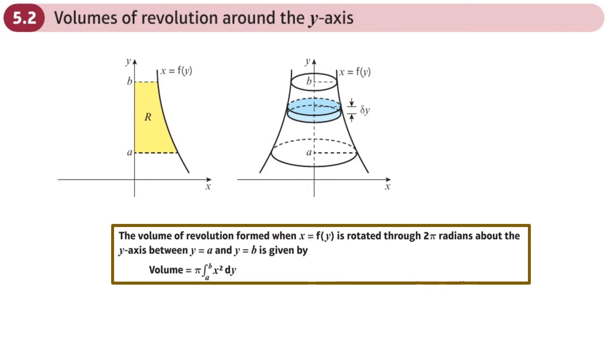This is the second section on volumes of revolution, and here we're looking at volumes of revolution around the y-axis. Very similar to volumes of revolution around the x-axis, this time we take a strip and rotate it 360 degrees, or 2π radians, around the y-axis to create a volume. If I shade that in, it almost looks like a hat, or you might want to work out the volume of a cooling tower or a thimble or something of that shape.